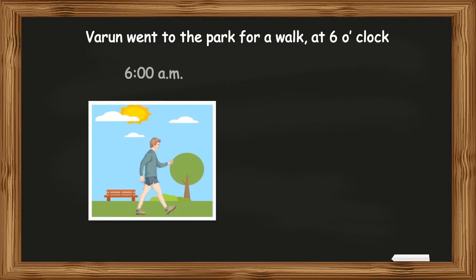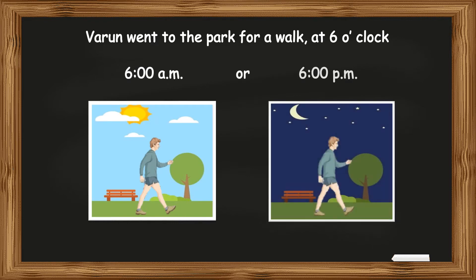But if I tell you that Varun went to the park for a walk at 6 o'clock, how will you know whether Varun went at 6am or 6pm? Because you don't know whether Varun went for a morning walk or an evening walk. In order to avoid this confusion of am and pm, we use a 24-hour clock.